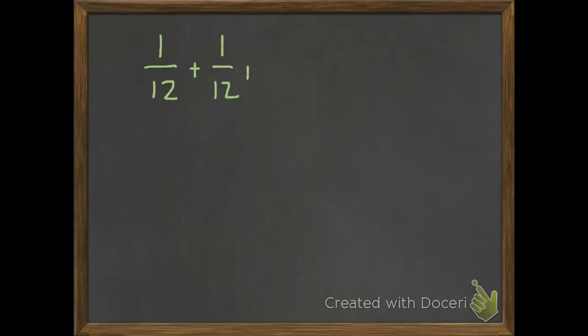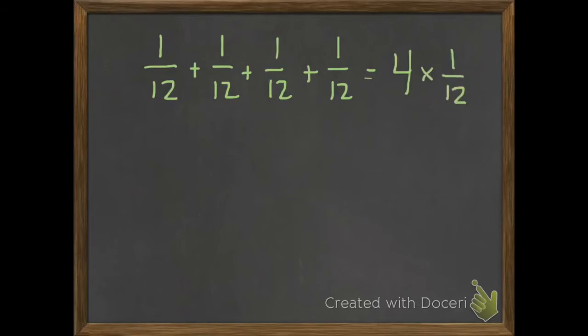Here's a second example. If I have 1 twelfth plus 1 twelfth plus 1 twelfth plus 1 twelfth, we can write this as 4 times 1 twelfth.